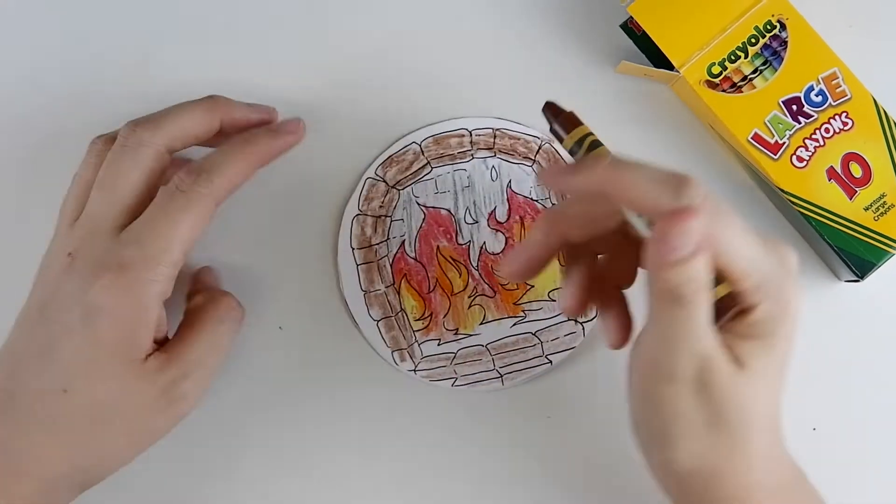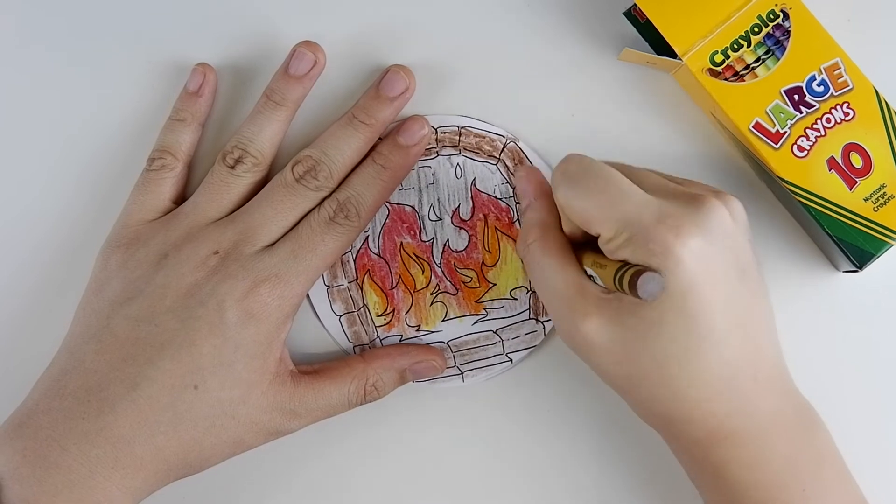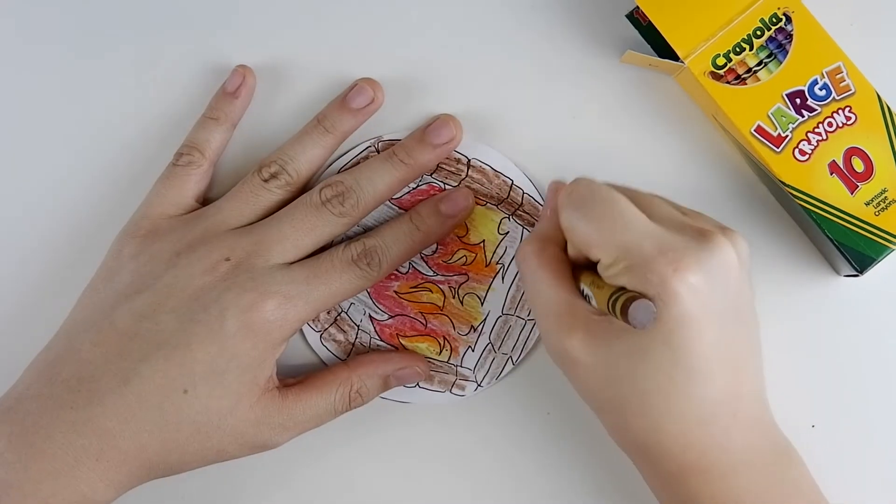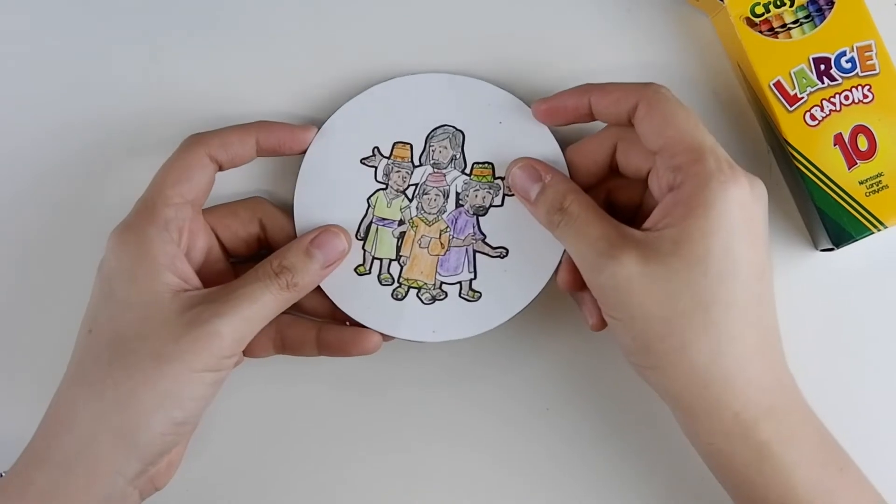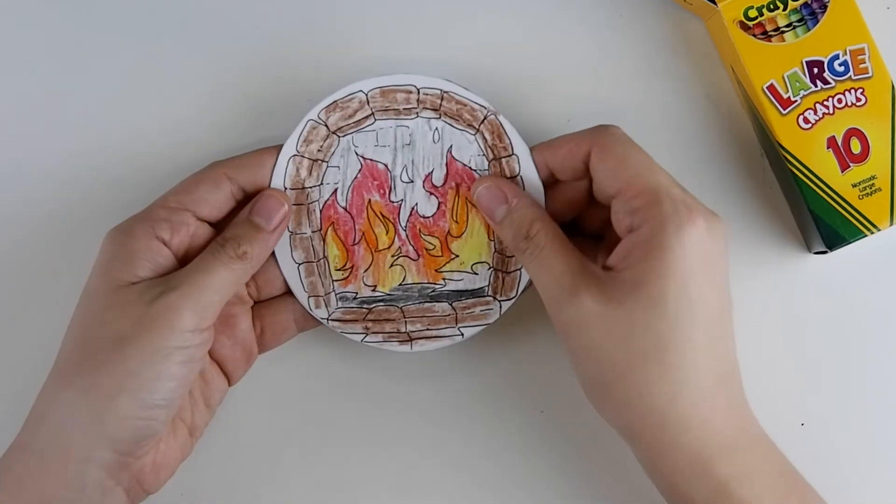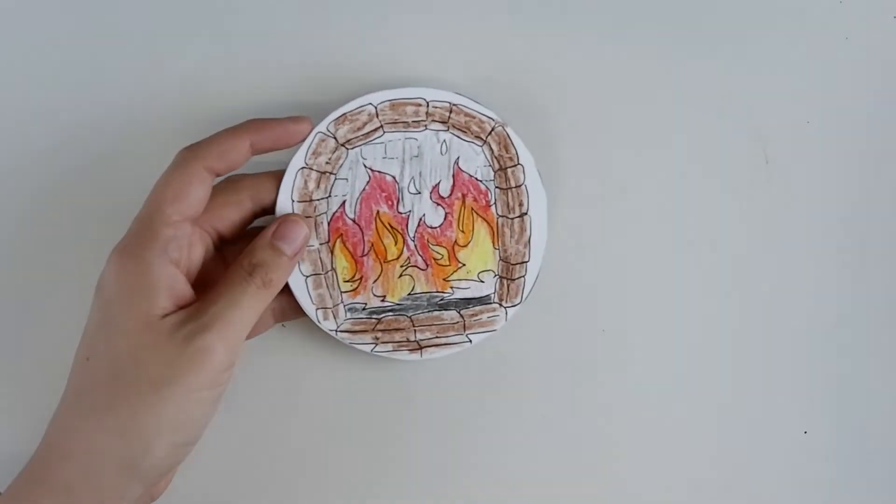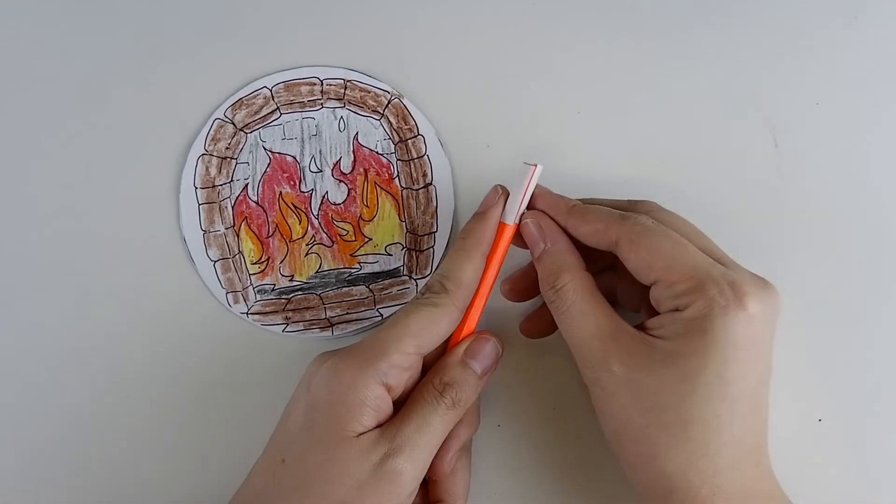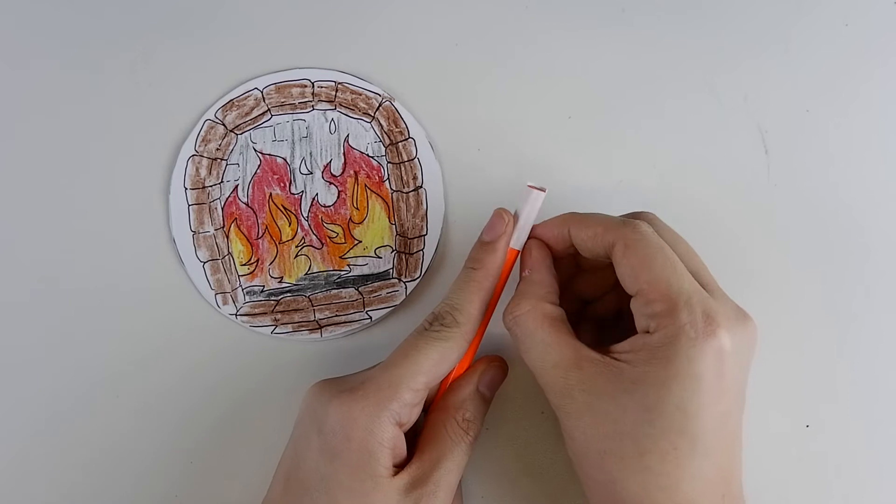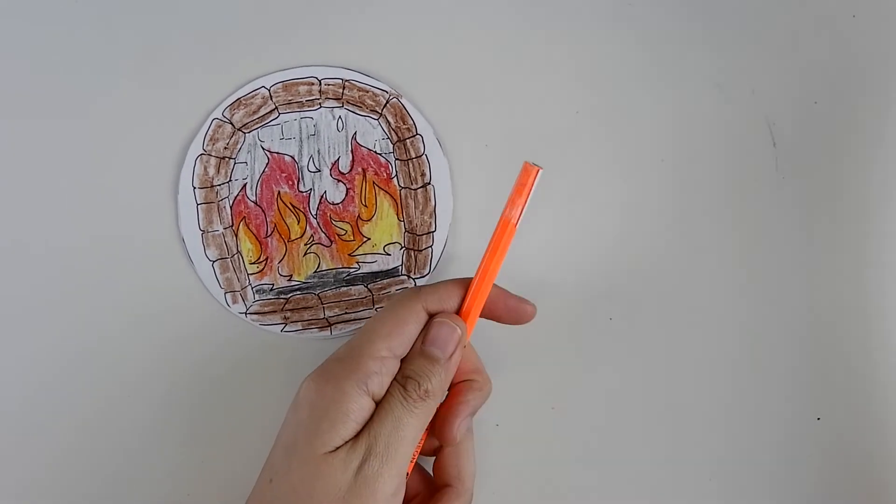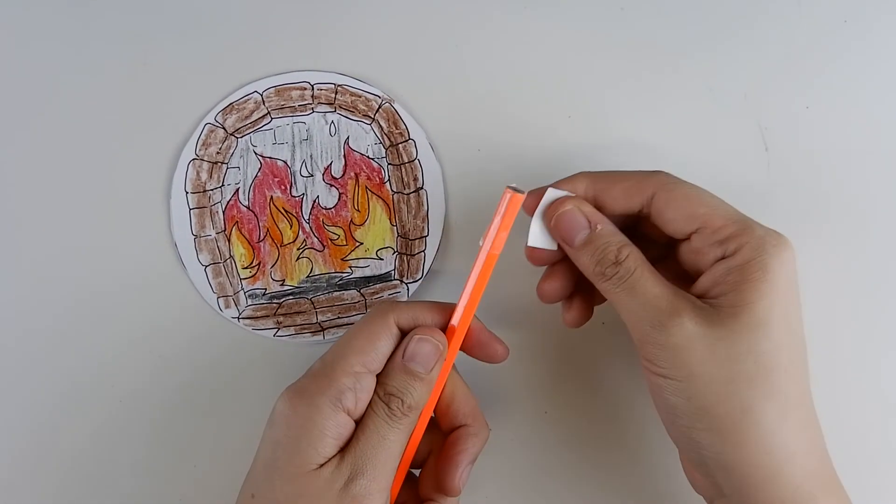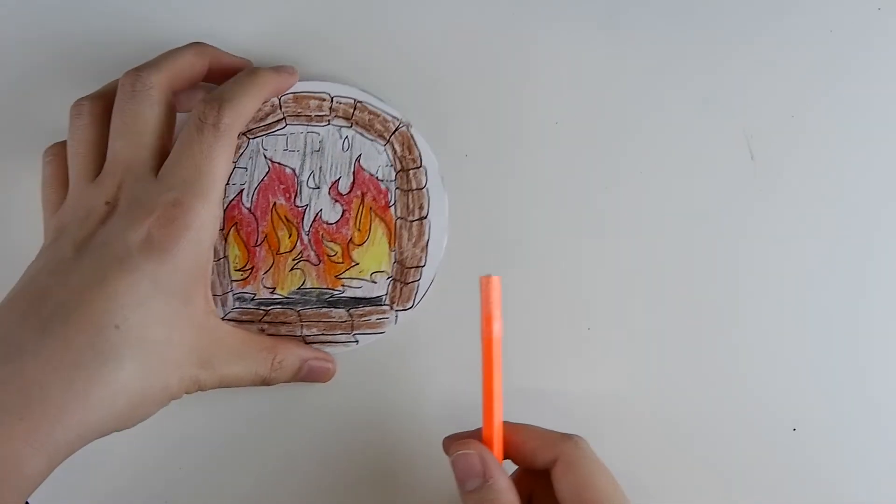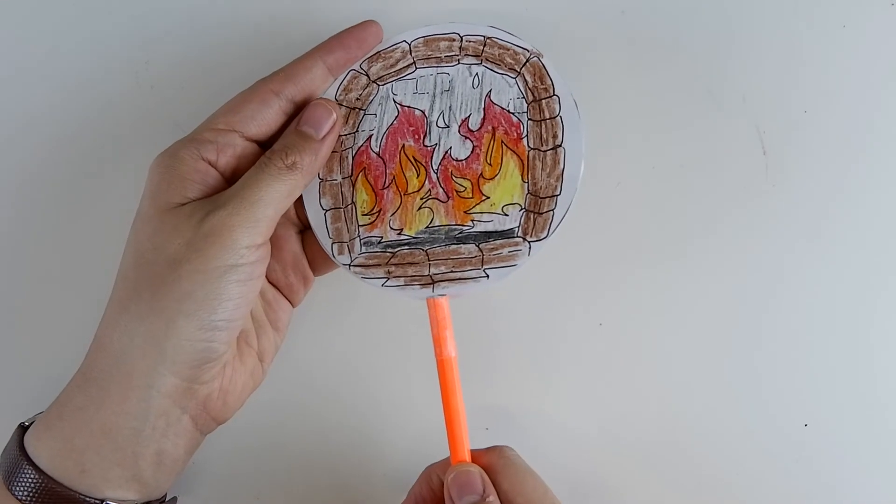Ask the kids to color the spinner top in any way they want. Once they're done with that, teachers assist the kids in removing the film of the double-sided tape of the pencil and help them stick the pencil inside the spinner top.